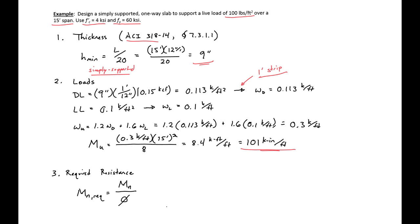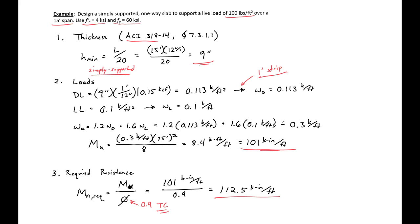We can then find our MN required by dividing our MU by phi. We're going to use a phi of 0.9, assuming tension-controlled behavior. So 101 kip-inches per foot divided by 0.9 gives us an MN required of 112.5 kip-inches per foot. This is the value we'll use moving forward in our design.